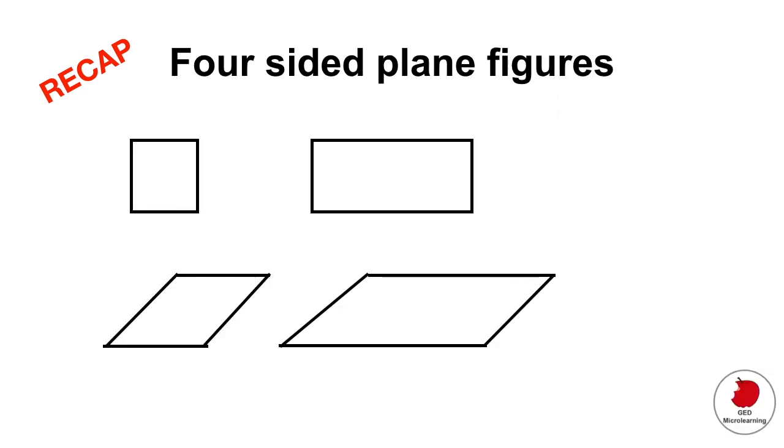The other super important detail is that whenever they ask you questions about any four-sided plane figure—that could be a square, a rectangle, a trapezoid, or a parallelogram—all of these angles are going to add up to 360 degrees. If you add up all the angles, that's what you get.